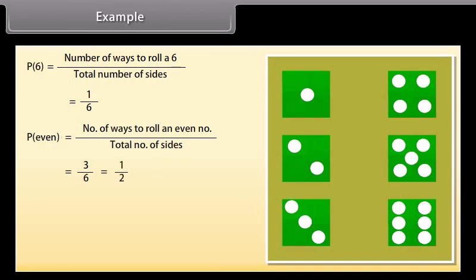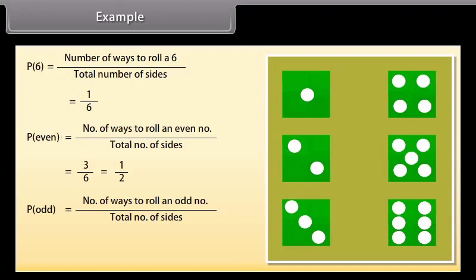And way to roll odd number is 3. So the probability P(odd) equals number of ways to roll an odd number upon total number of sides, which equals 3 upon 6, which is 1 upon 2.